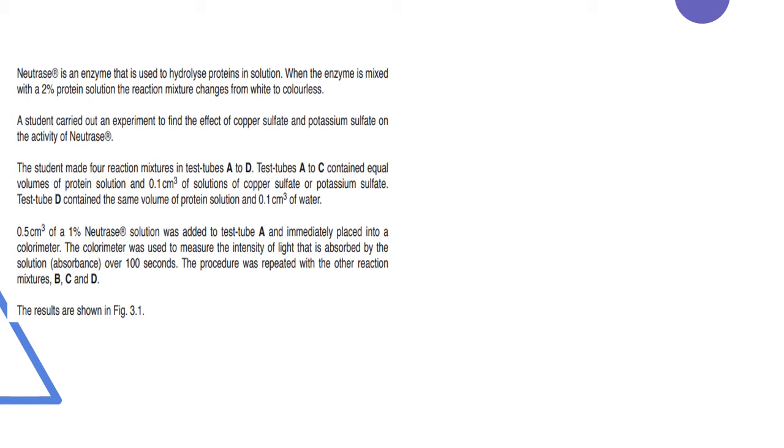Let's look at this one. It says Neutralase is an enzyme that is used to hydrolyze proteins in solution. My first advice is take your pencil and start to underline or jot down key thoughts. So where it says Neutralase is an enzyme that hydrolyzes proteins, first thing I would write is breaks down proteins. When the enzyme is mixed with a 2% protein solution, the reaction changes from white to colorless. This means that when the protein is broken down, the final color will be colorless.